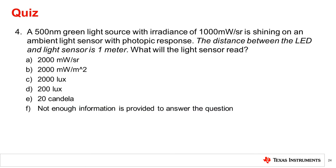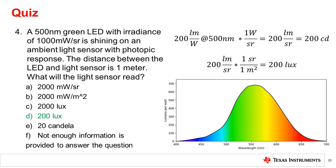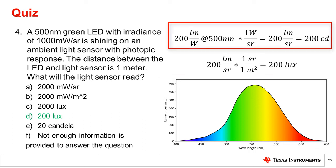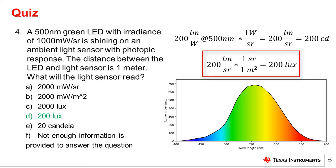Question 4: A 500 nanometer green light source with a radiance of 1000 milliwatts per steradian is shining on an ambient light sensor with photopic response. The distance between the LED and light sensor is 1 meter. What will the light sensor read? Using the lumens per watt plot from the slides, watts per steradian can be converted to lumens per steradian. Then the distance can be used to convert candela to lux as shown.